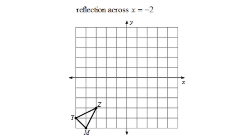Now let's do our second reflection — we're going to reflect an image across x equals negative two. The line x equals negative two goes straight up and down from negative two — that's our line of reflection. We have a triangle. Point Z is one unit away from the line, so from that point go over one more — that's Z prime. Point Y is three units away, so go over three units — that's Y prime. Point M is two units away, so go over two units — that's M prime. Connect the dots and there's the reflection across x equals negative two.